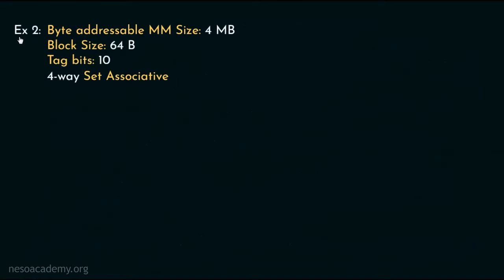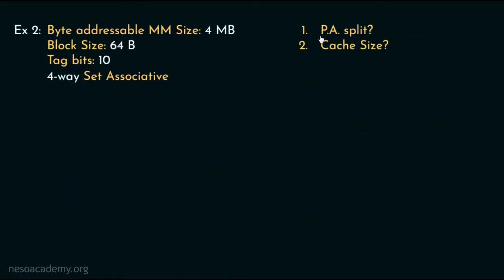Consider example number 2. Here a byte addressable main memory of size 4 megabytes is given. The block size is mentioned as 64 bytes, tag bits are given as 10 bits, and we are using a 4-way set associative cache. We are being asked first about the physical address split and then about the cache size. Now let's try to solve this.